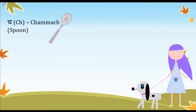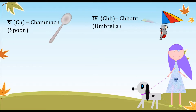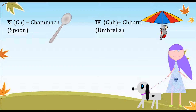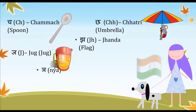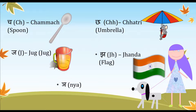Then we have 'cha' — 'chamach' which is a spoon; 'chha' — 'chhatri' which is an umbrella — very useful when it's hot and sunny to give you a bit of shade; 'ja' — 'jug'; and 'jha' — 'jhanda' which is what the Indian flag looks like.